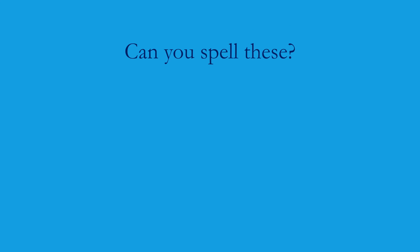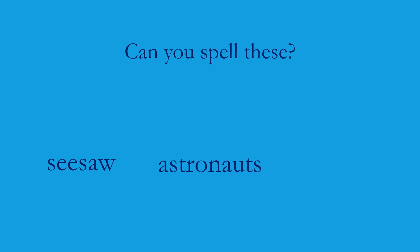Let's see if you can spell these. The first word is seesaw — when I go to the park, I love to play on the seesaw. Here it is. The next one is astronauts — there were two astronauts who went up into space very recently. Astro means star and nauts means sailors, so astronauts are people who sail up in the stars. And how did they get up into space? They were on a rocket that launched. So your word is launched — be careful with this one. Here it is.